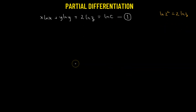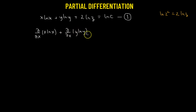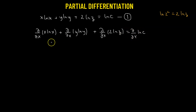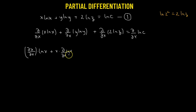We take the partial derivative of both sides of equation one with respect to x. Applying the product rule to the first term x·log(x), we get ∂x/∂x · log(x) + x · ∂(log x)/∂x. The term y·log(y) gives zero since y is treated as a constant with respect to x.